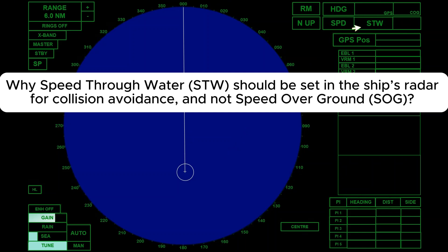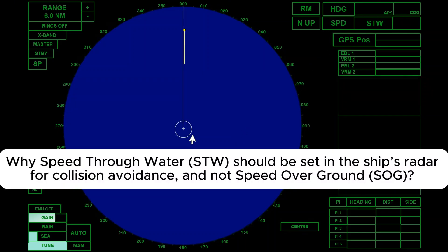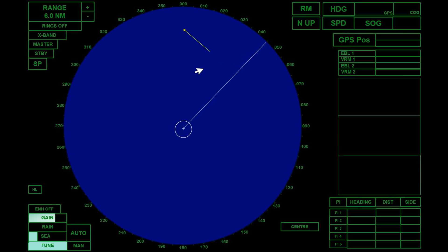Why speed through water should be set in the ship's radar for collision avoidance, and not speed over ground. But before we proceed, let's go first with their definitions.